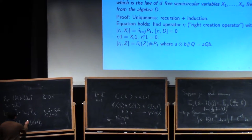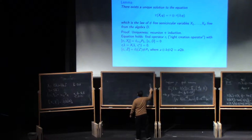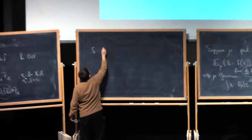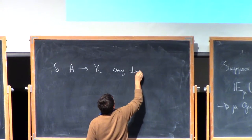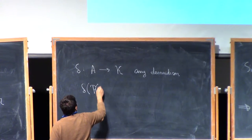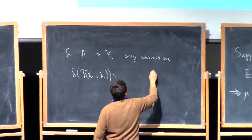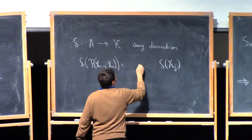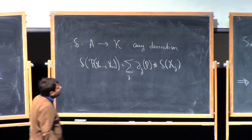This del_i is a kind of universal derivation. In fact, anything that satisfies the Leibniz rule somehow factors through this derivation del_i. So if I have delta from my algebra A into any module K — any derivation — then del of some polynomial of x_1 through x_n can be written as: I simply differentiate each of the variables x_j, look at d_j of p, hash it, and sum.